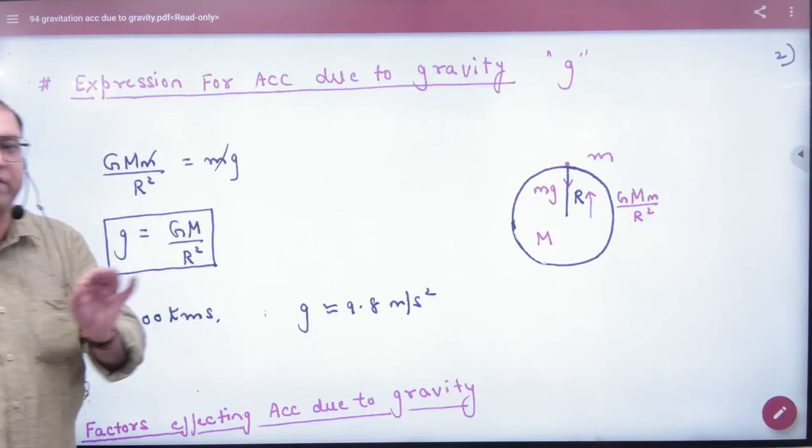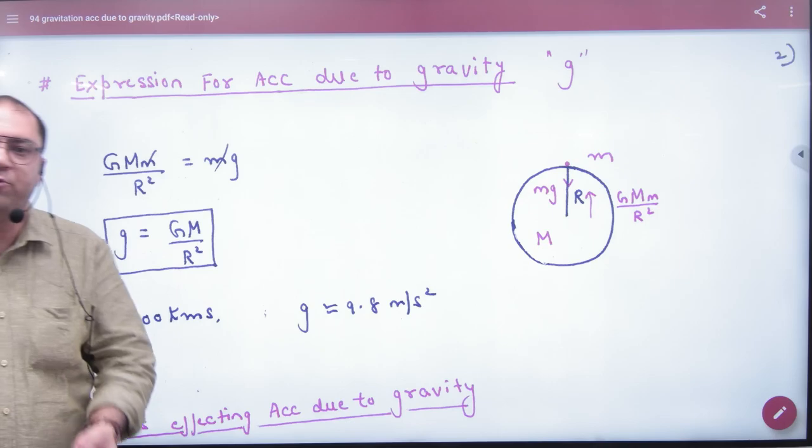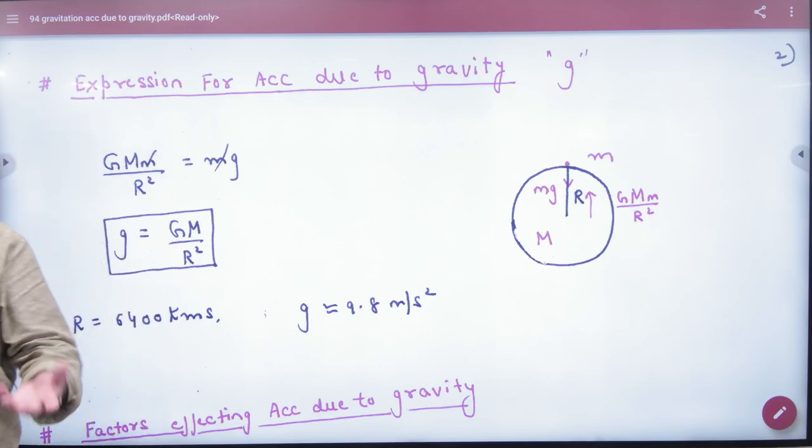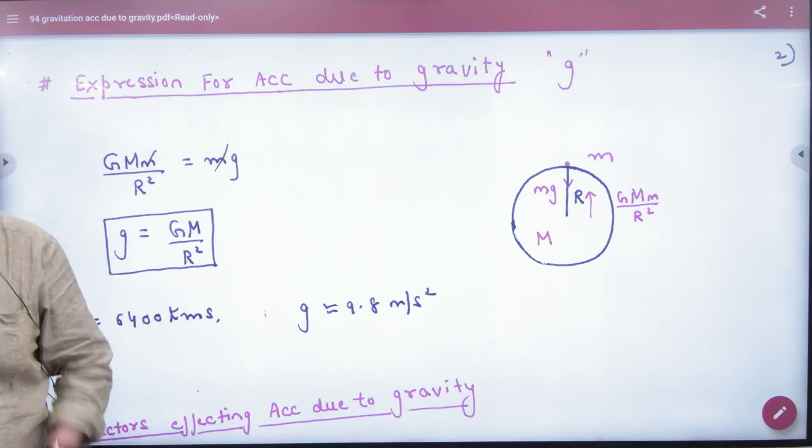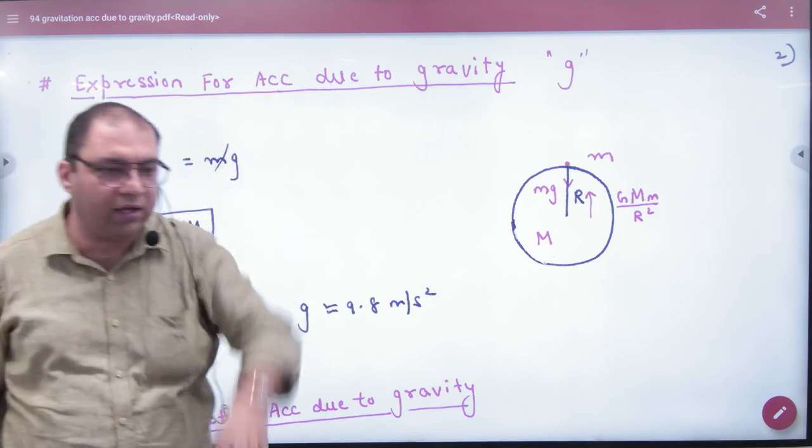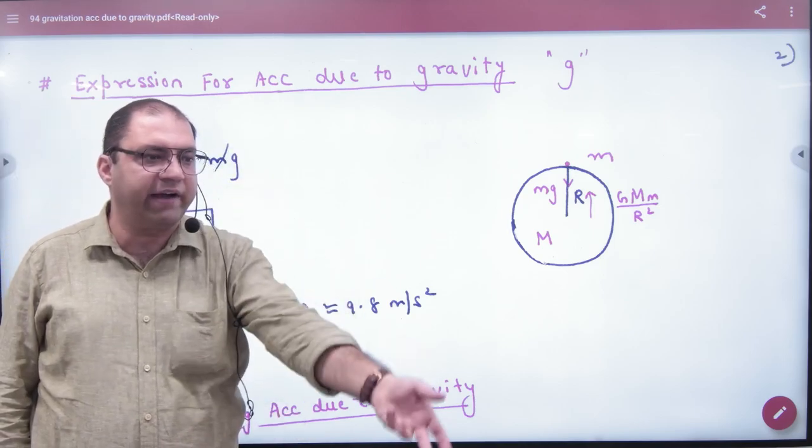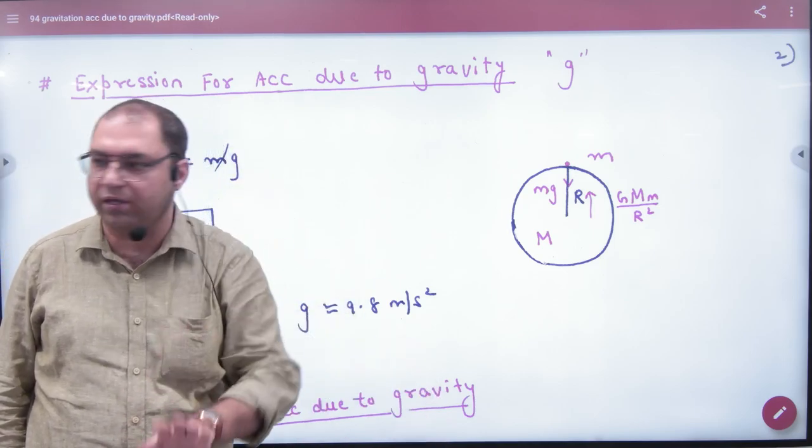Expression for acceleration due to gravity is small g. So if I ask you, what is the value of small g? You say 9.8 m per second squared. So how did we get it? The force was given, mass divided by g is 9.8. No problem.